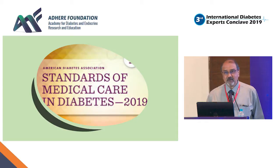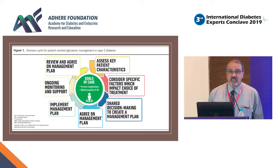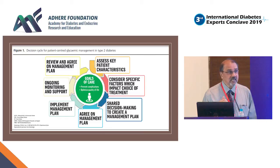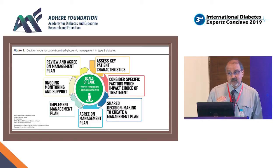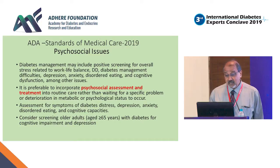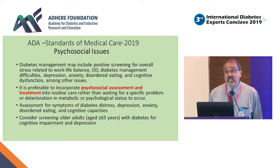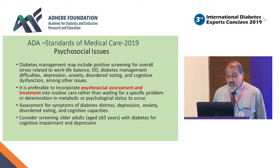What is important to realize is that you have diagrams like this, which is trying to clearly tell us that you need to assess the key patient characteristics and the psychological issues that I will be talking about. Just take a minute of your time. Let's just read this slowly because it makes a huge impact and a difference. The diabetes management may include positive screening for overall stress related to work-life balance, diabetes distress, diabetes management difficulties, depression, anxiety, disordered eating, cognitive dysfunction, among other issues. It's preferable to incorporate psychological assessment and treatment into routine care. This is what the ADA says — bring it into the routine care.